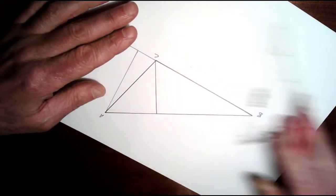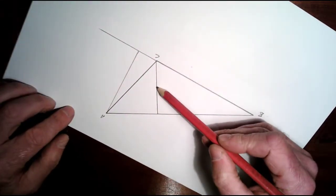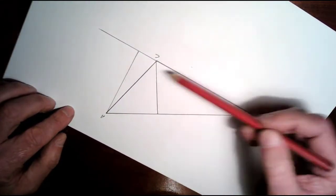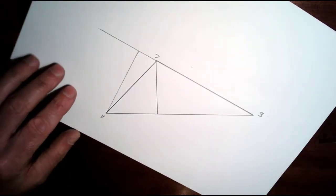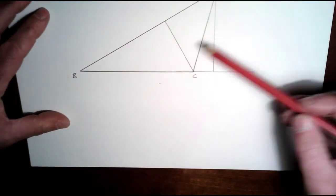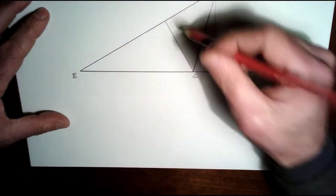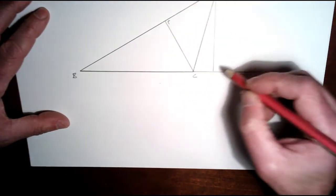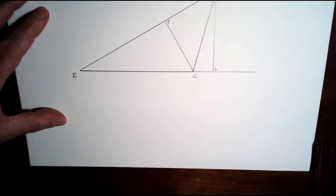So there are my two altitudes—this one here and this one here—but you can see they don't intersect here. So what we're going to have to do is just extend them. So these are my two altitudes, this one here and this one here. There's a right angle there and a right angle here.